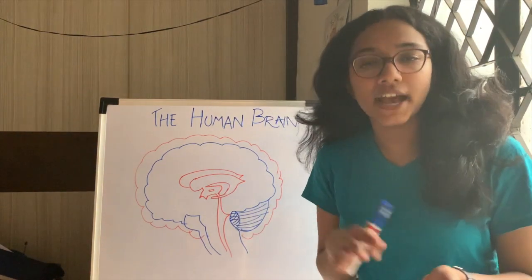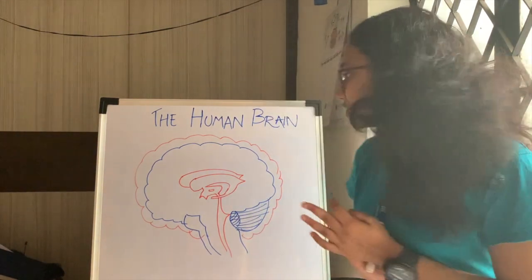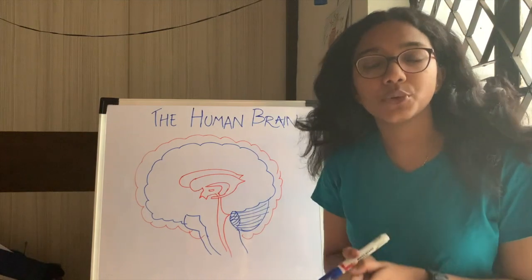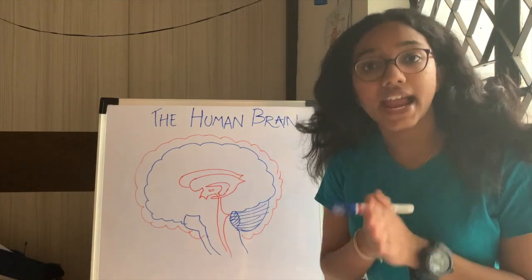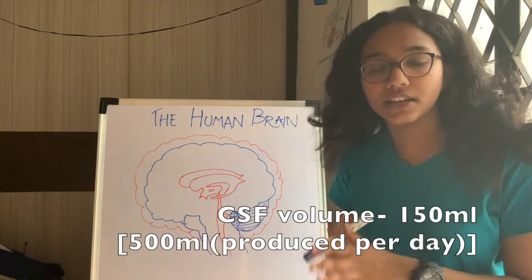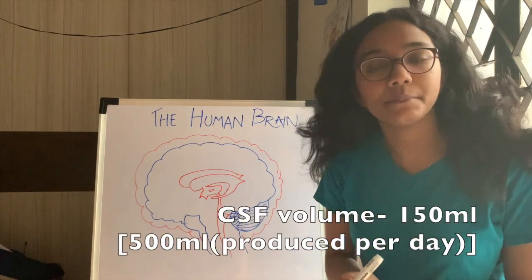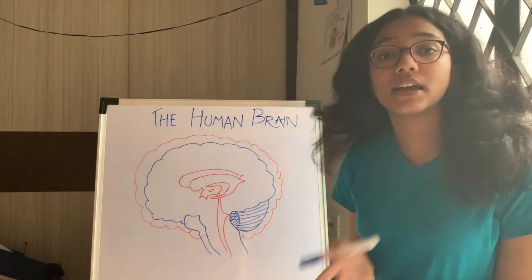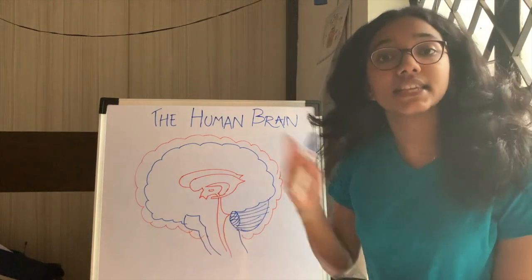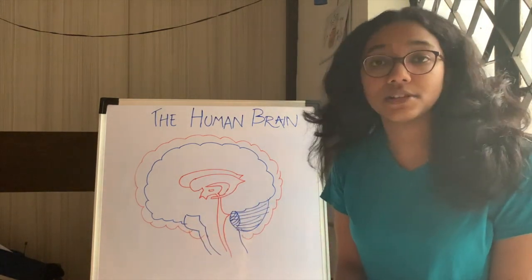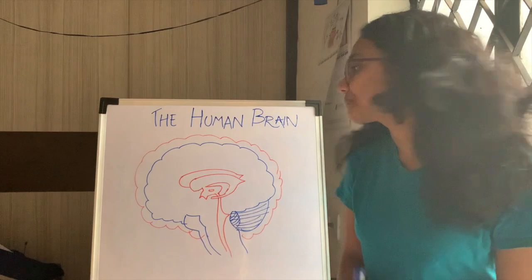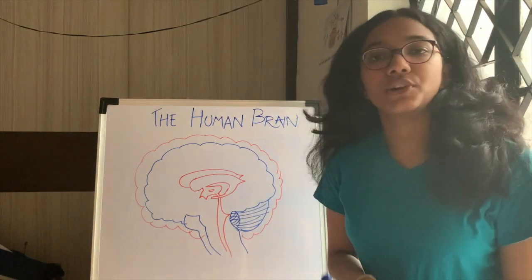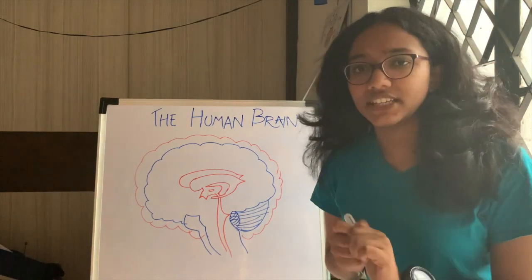Let me give you a few facts and figures. The amount of cerebrospinal fluid present at a time in our brain is 150 ml, and the amount of fluid secreted by the ependymal cells in the ventricles is 500 ml per year.